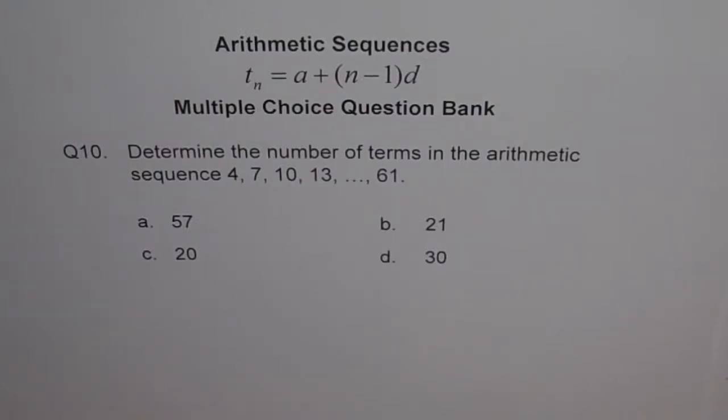Question 10. Determine the number of terms in the arithmetic sequence 4, 7, 10, 13, last term is 61.